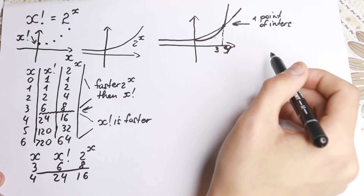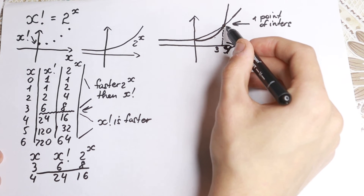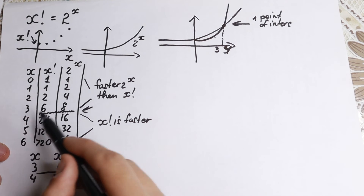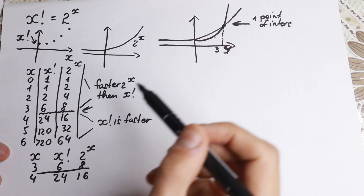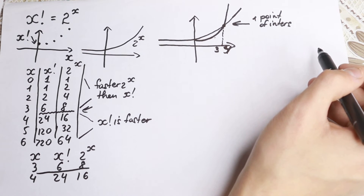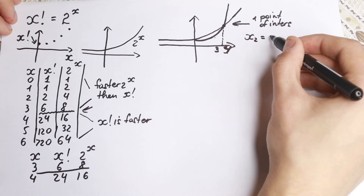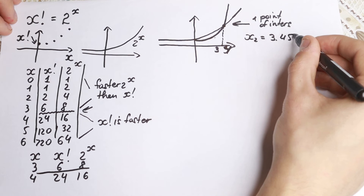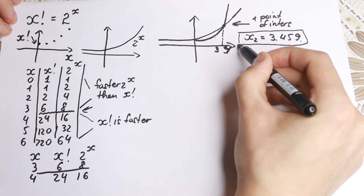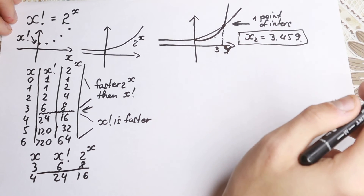One really interesting moment: if you're interested in this equation for whole number solutions — integers — we don't have any integer solution between 3 and 4. Because at x=3 we don't have equality, and at x=4 we don't have equality either.